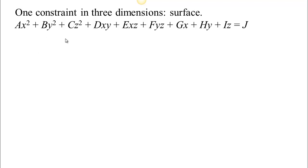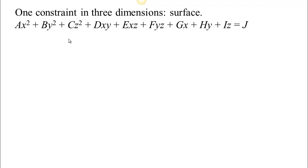With one constraint in three dimensions, you get a surface, and we're going to work on just a single quadratic constraint. Your general quadratic constraint can include linear terms in x, y, and z; cross terms like x times y, x times z, or y times z; and squared terms x squared, y squared, and z squared. That's all you can have if you limit yourself to no more than two variables multiplied together — that's the maximum complexity. We call this a quadratic constraint.